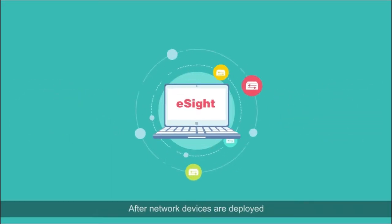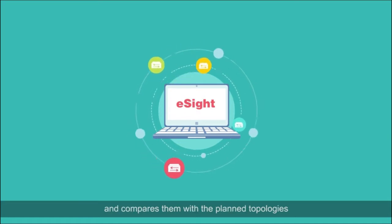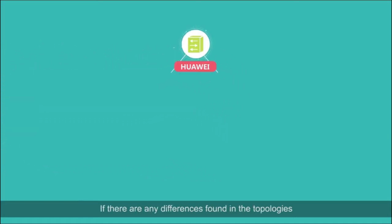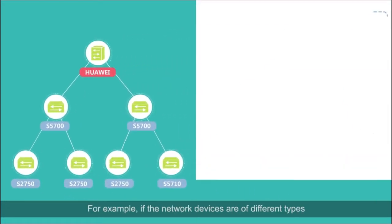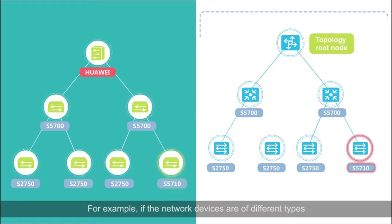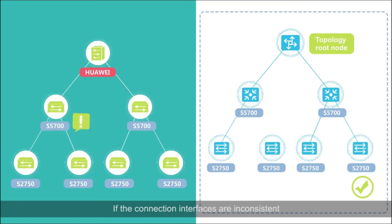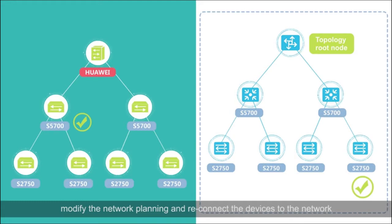After network devices are deployed, eSight collects the topologies and compares them with the planned topologies. If any differences are found, the system will prompt a message. For example, if the network devices are of different types, it is required to replace the devices on the live network. If the connection interfaces are inconsistent, modify the network planning and reconnect the devices to the network.